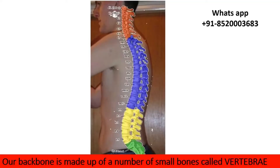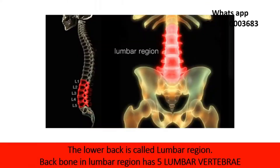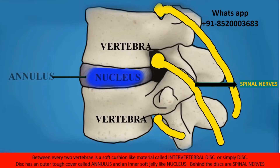Our backbone is made up of a number of small bones called vertebrae. The lower back region is called the lumbar region, which has 5 lumbar vertebrae. Between every two vertebrae is a soft cushion-like material called an intervertebral disc, or simply disc. The disc has two components: an outer covering called the annulus and an inner soft jelly-like material called the nucleus. Behind the discs are our spinal nerves, which supply the legs.